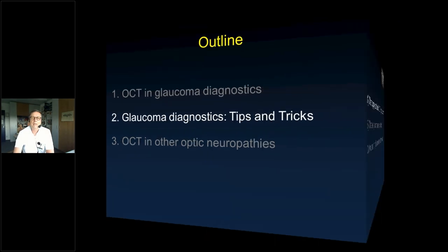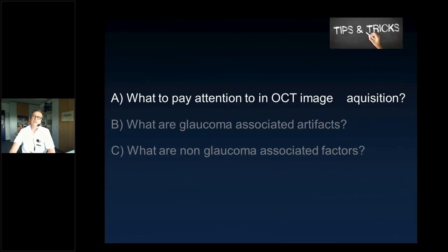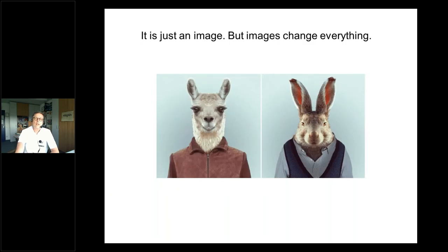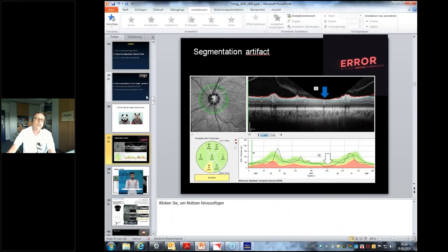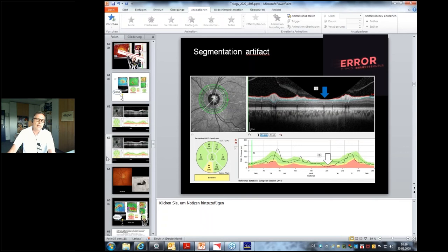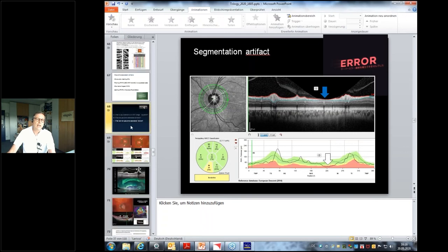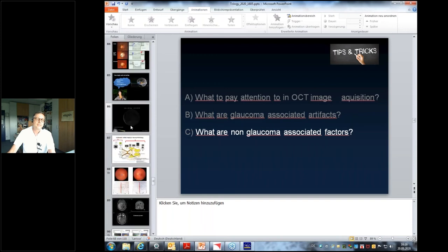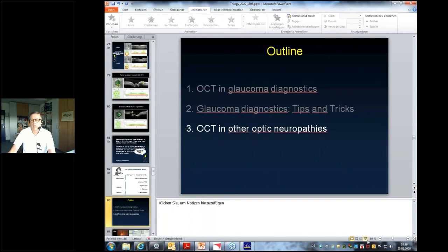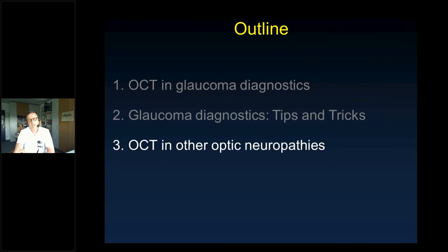Thank you Stefan. We are now going to another topic — other neuropathies. Most often patients are sent to us as suspect glaucoma, and not rarely at a university hospital you end up with quite another disease. We have to be aware of using our OCT also in other optic neuropathies. When we look at the optic disc: a normal disc, a glaucoma disc with cupping, but when we have a very pale neural rim and the cupping is not enlarged, we call this simple optic atrophy, having many many reasons.